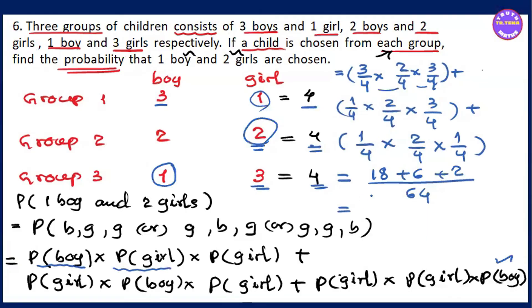The result is 26 by 64. You can see that 26 by 64 simplifies. It's only 4, so we simplify it to 13 by 32.